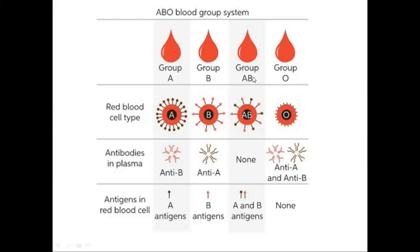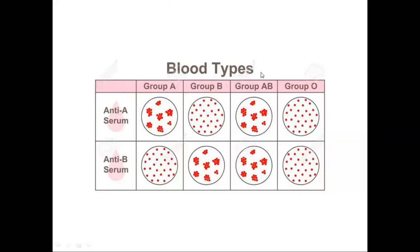A patient having blood group AB must have both antigens A and B present in his blood, while both antibodies are absent in his plasma. Blood group O has no antigen present, while both anti-A and anti-B antibodies are present in the plasma. For blood transfusion, we must know the blood group of the patient.